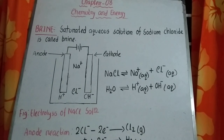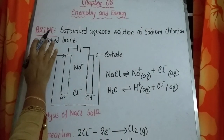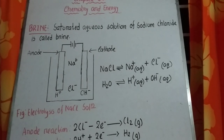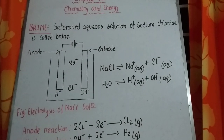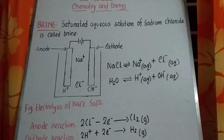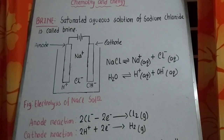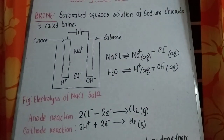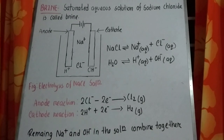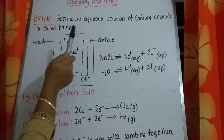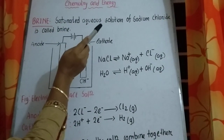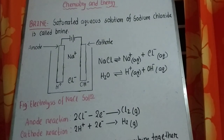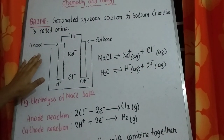Now come to the electrolysis of brine. Before going to the electrolysis of brine, you have to know what is brine. Saturated aqueous solution of sodium chloride is called brine. A saturated solution is one where the solute is fully and equally mixed with the solvent everywhere. An unsaturated solution is one where the solute does not dissolve equally everywhere in the solvent.